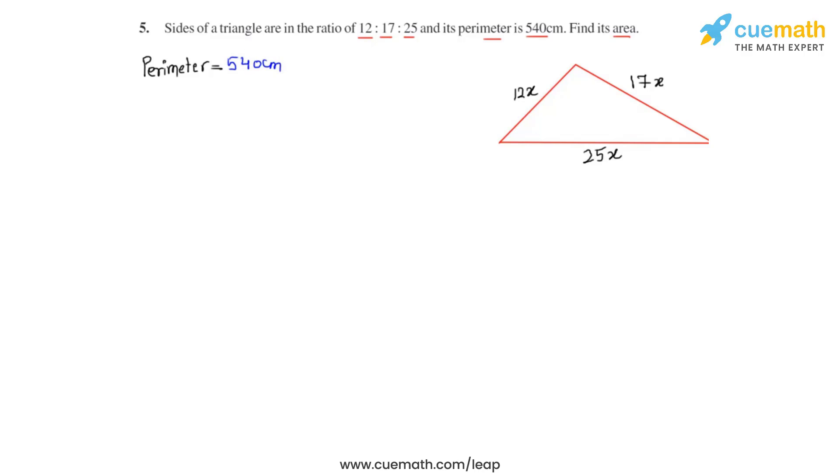A perimeter is found by adding up all the sides. Let's add 12x plus 17x plus 25x and equate it to 540. So we get 54x to be equal to 540. From this we can calculate the value of x to be equal to 10.